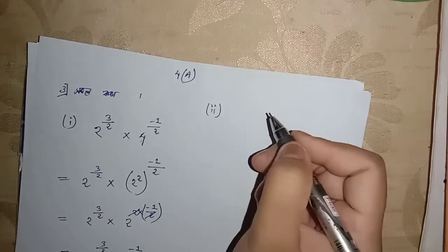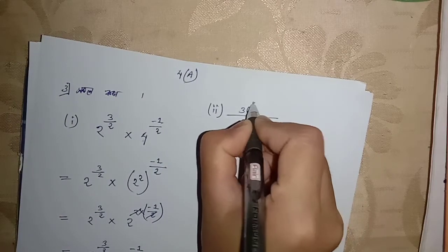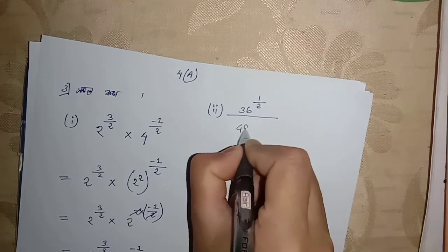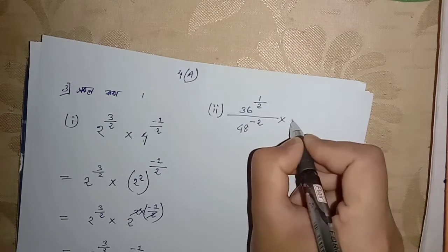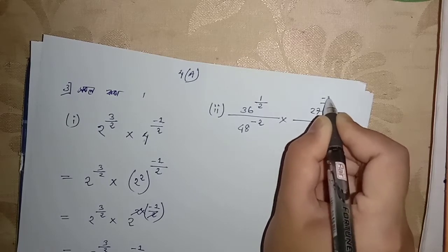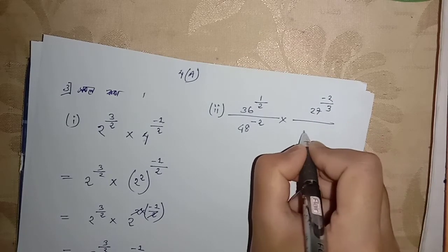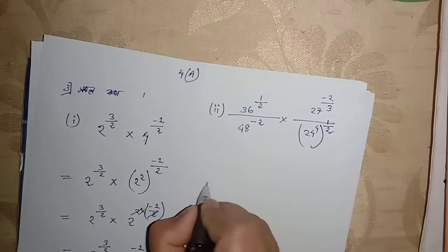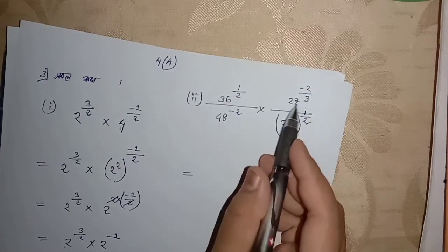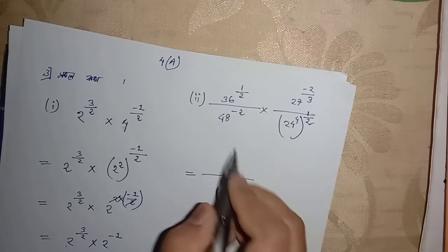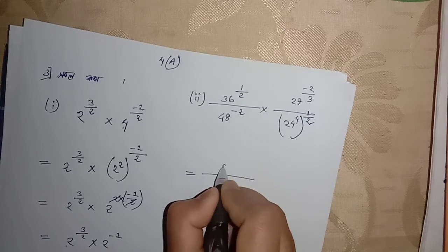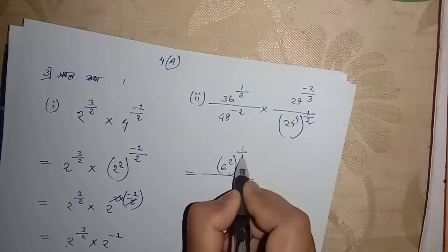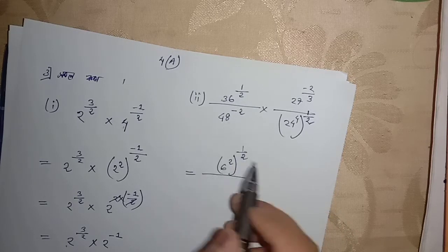Here we have 36 to the power 1 upon 2, 48 to the power minus 2 into 27 to the power minus 2 upon 3. 36 square root, 6 square is equal to 36.